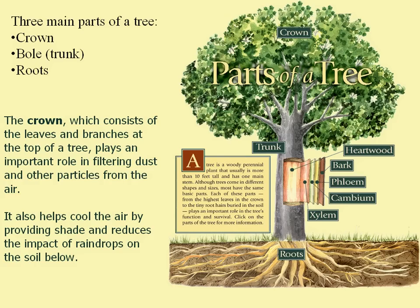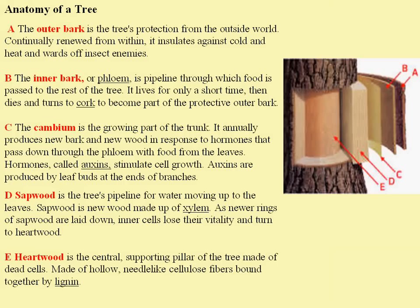If you were to cut into a tree or get a cross section of a tree, you would see five major layers. The outer bark is the tree's protection from the outside world. The inner bark, which is also called the phloem, is the pipeline through which food is passed through the rest of the tree. The way to remember the difference between phloem and xylem is that phloem controls food and xylem controls water — the phloem-food analogy. That inner bark, or phloem, lives only for a short time and then turns to cork, which becomes part of the protective outer bark.